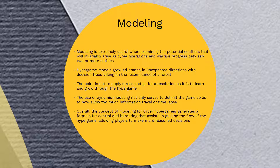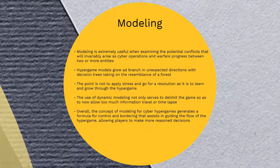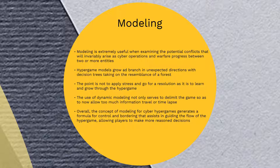There are various ways of representing a game, perhaps the most intuitive being as a tree of moves. For example, a game of chess, which grows and branches out in many unexpected directions. In a cyber hypergame, the objective is to learn and grow. Dynamic modeling in cyber hypergaming may be useful to deal with time constraints and the inclusion of new information. Modeling for cyber hypergames generates a formula for control and bordering that assists in guiding the flow of the game.